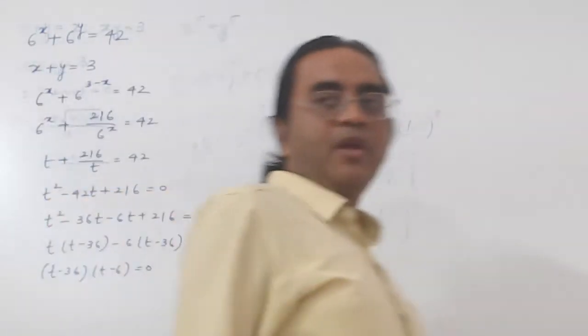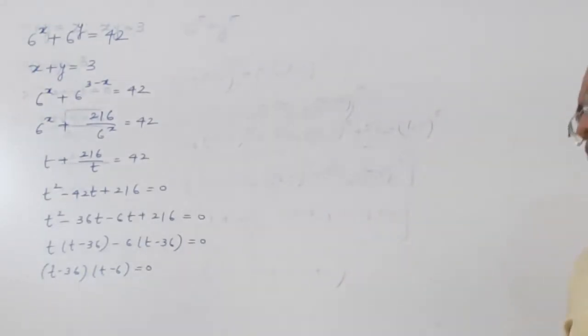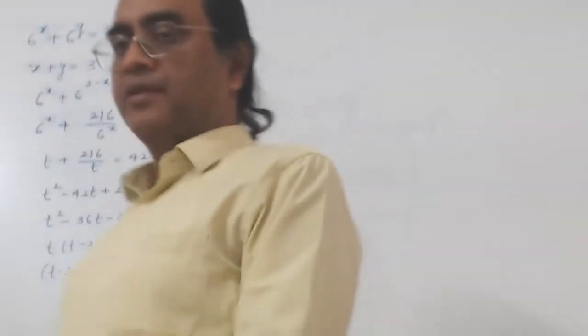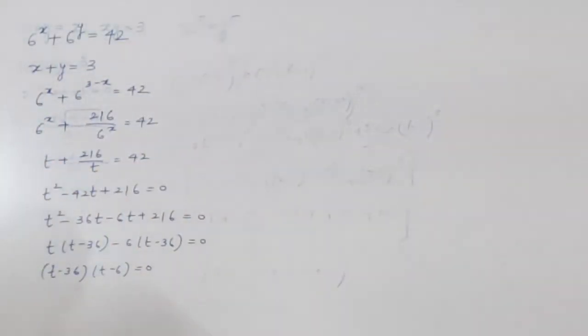So clearly the two roots are t equal to 6, t equal to 36. But t itself is 6 to the power x.